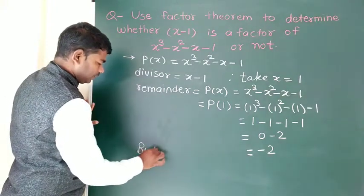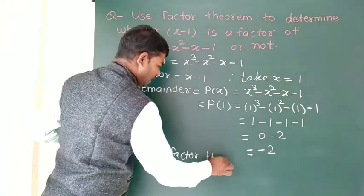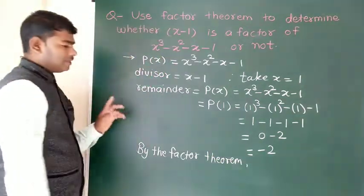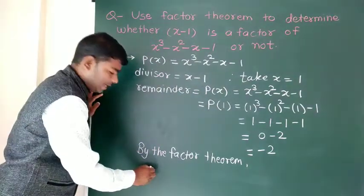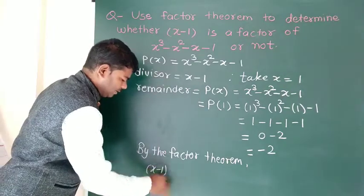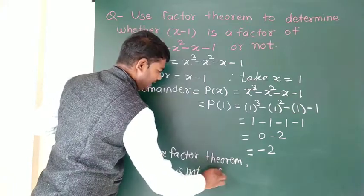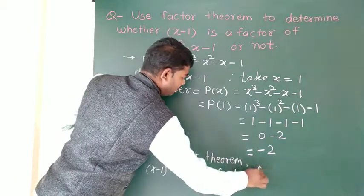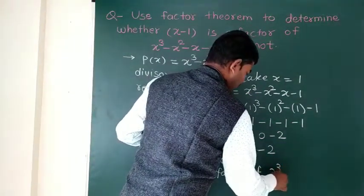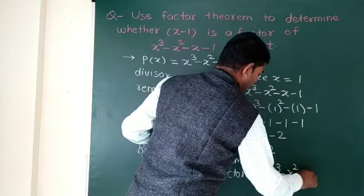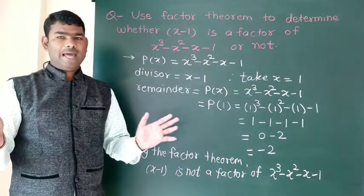By the factor theorem, since the remainder is not zero, x minus 1 is not a factor of x cube minus x square minus x minus 1.